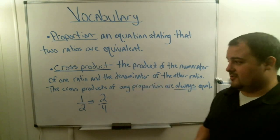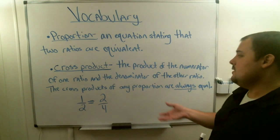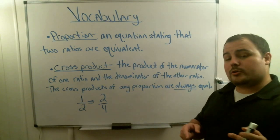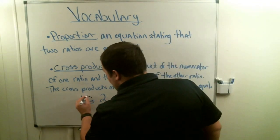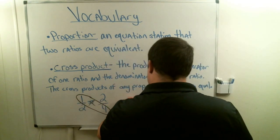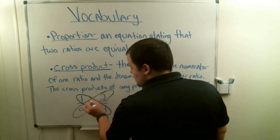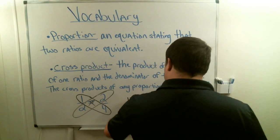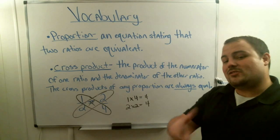A cross-product can only happen if you have two things set equal to each other. It's the product of the numerator of one fraction, or ratio, and the denominator of the other ratio. In a proportion, the cross-products are always going to be equal. So if I took 1 times 4, that equals 4. If I want to test if this is proportional, I would take 2 times 2 — the other cross-product — and see if those are equal. And 2 times 2 equals 4. So whenever I took both of these fractions and cross-multiplied, I found out that they both have the same answer.